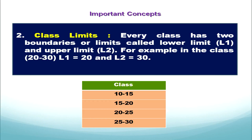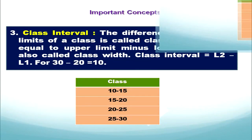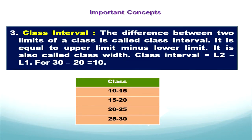The second concept is class limits. Every class has two boundaries or limits called lower limit and upper limit. For example, in the class 10 to 15, the lower limit is 10 and the upper limit is 15. Whereas in the next class, 15 is the lower limit and the upper limit is 20. The difference between the two limits of a class is called the class interval — that means the gap between the lower limit and upper limit.